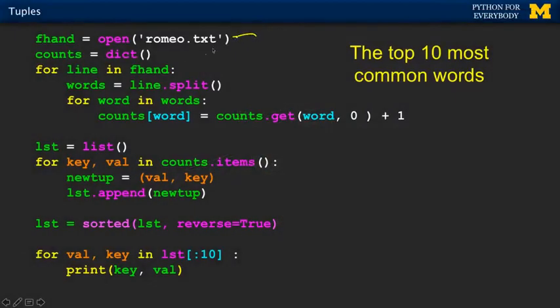Here's how we do it. We open a file, we make a dictionary, we loop through all the lines of the file, and we split the words in the file. The file looks kind of like this — we loop through the lines of the file, and then for each line we loop through the words. That's the outer loop and the inner loop.